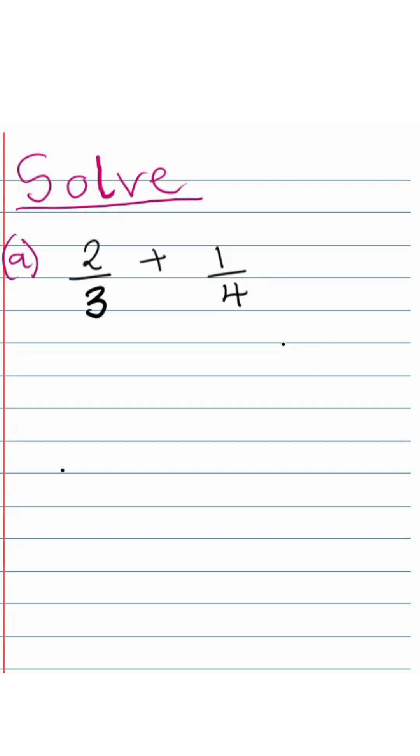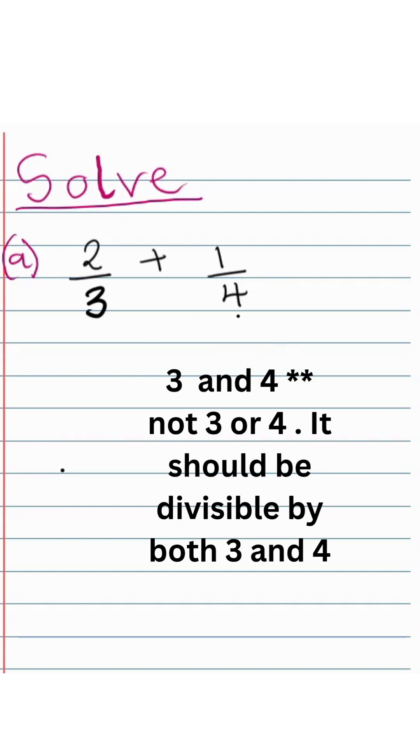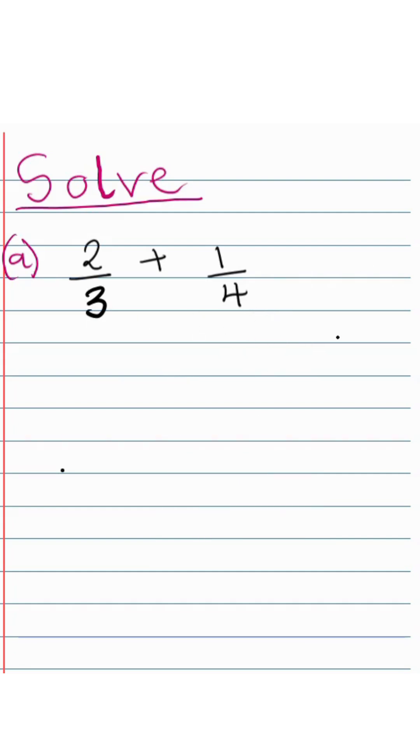A common denominator is a number that can be divided by 3 or 4 without leaving a remainder. And that number, in our case, is 12. So we need to make sure that our denominator here on this side becomes 12 and also on this side as well becomes 12.